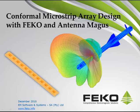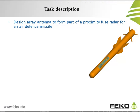This is a demonstration of conformal microstrip array design with FEKO and Antenna Magus. We will use the design of an antenna for a proximity fuse radar for an air defense missile as a case study.